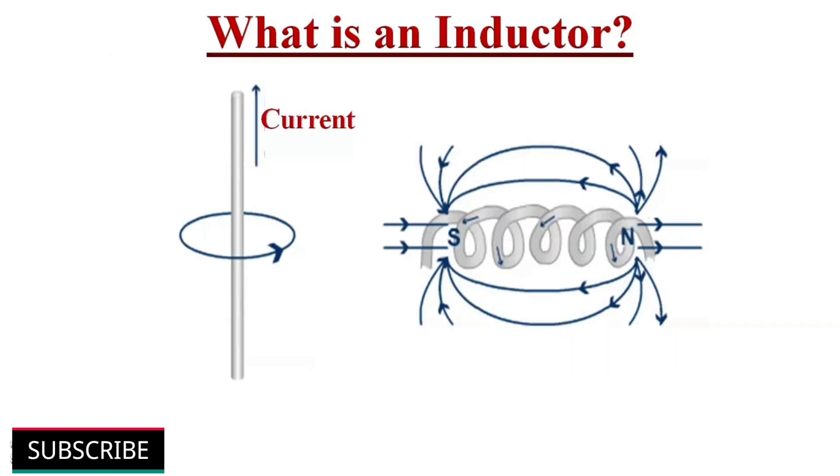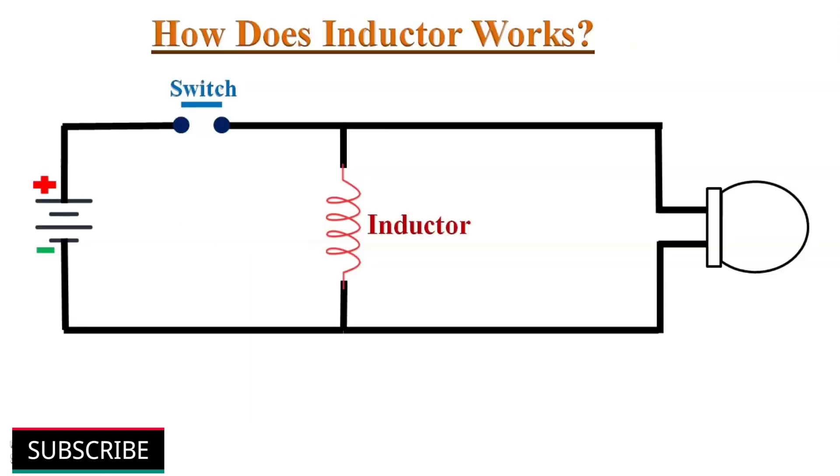Hence, the current flowing through a conductor wrapped as a coil produces a much stronger magnetic field. Let us try to understand how an inductor works with the help of a simple circuit.